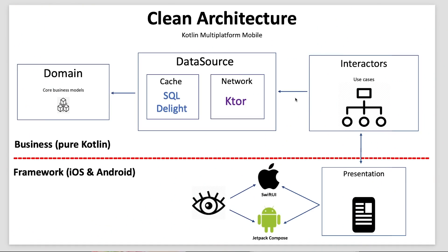The use cases get their dependencies from the different data sources. We have the caching data source, which I used SQLDelight for — a pure Kotlin third-party library that enables SQLite caching on both the iOS and Android clients. And then we have the networking data source, which I used Ktor for. The data source talks to our domain, which contains our core business models. For the recipe application, one example of a domain model would be the recipe model — with fields like ID, title, publisher, ingredients, and image — a model that's central to how the application functions.